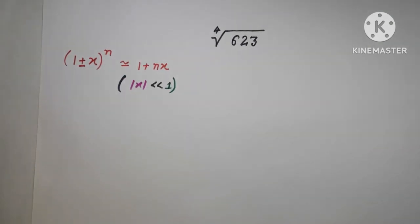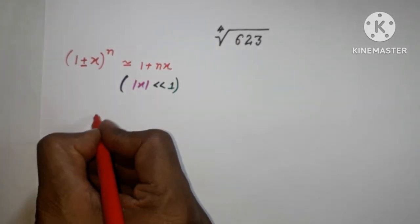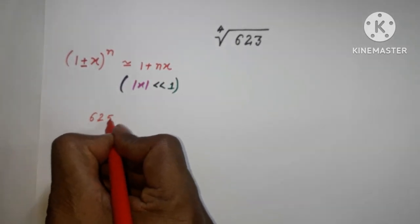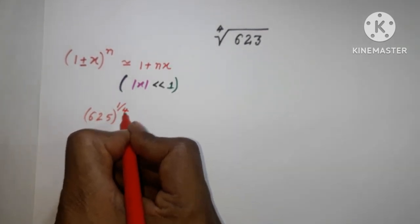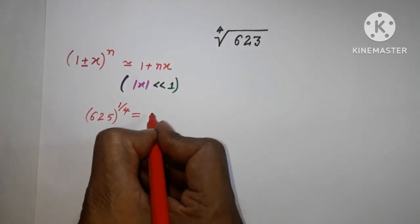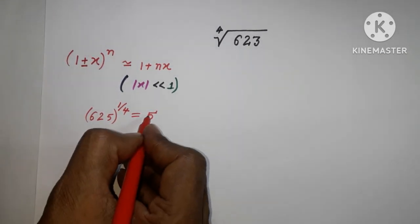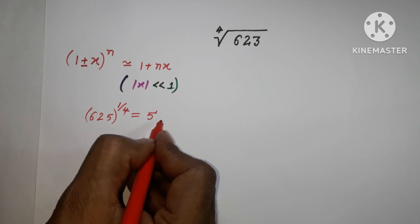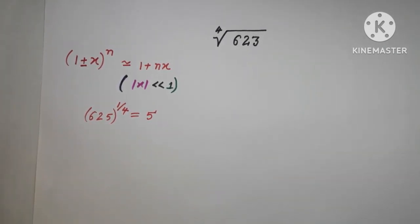As we know, 625 and its fourth root is 5, because 5×5=25 and 25×25=625. So the fourth root of 625 is 5.